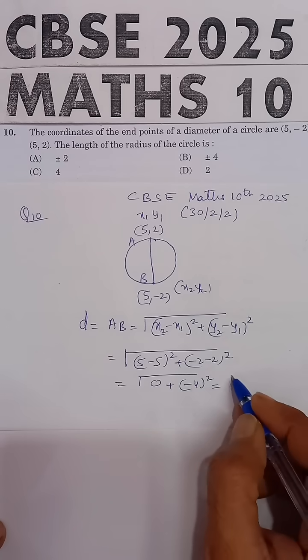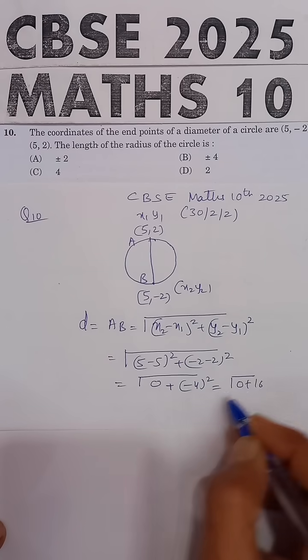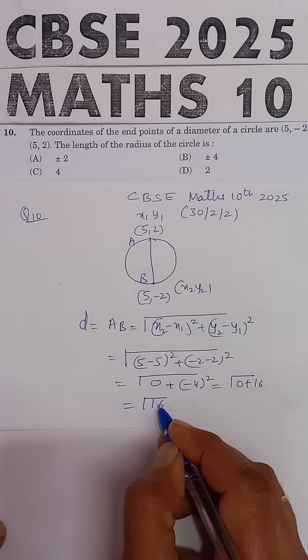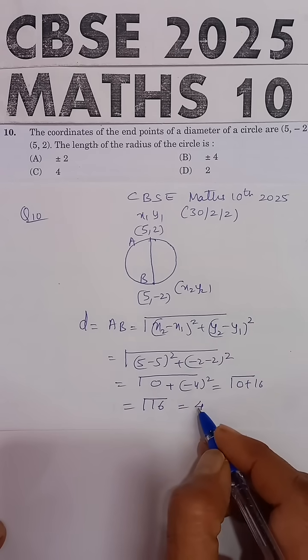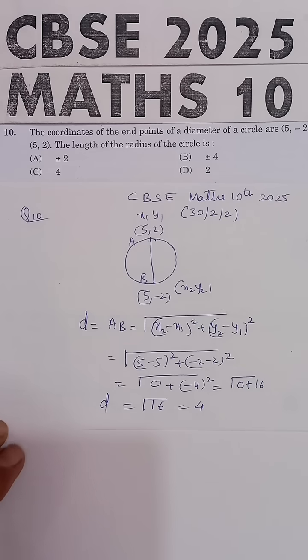This will be square root of 0 plus 16, which equals square root of 16, which equals 4. So the diameter of the circle is 4.